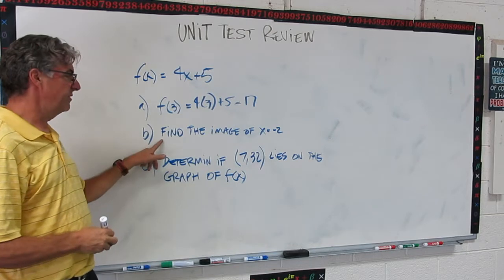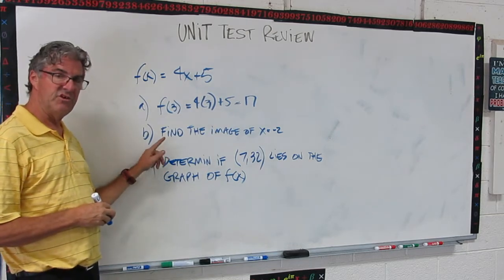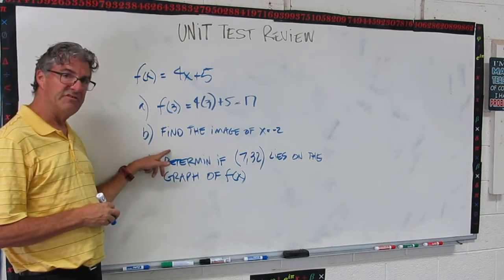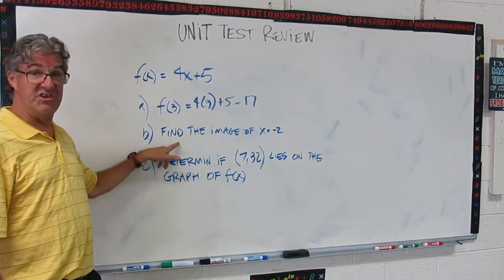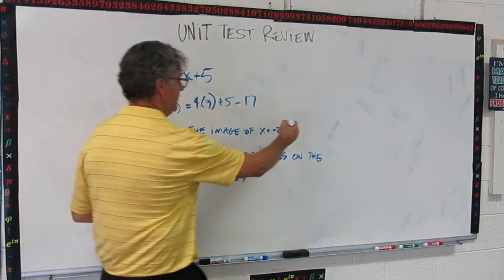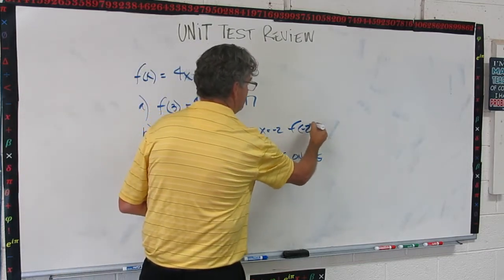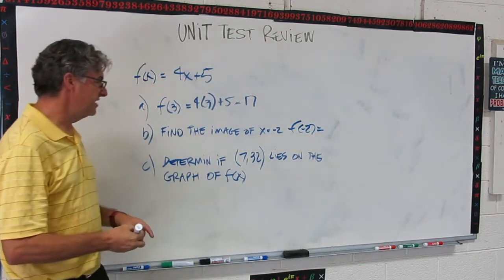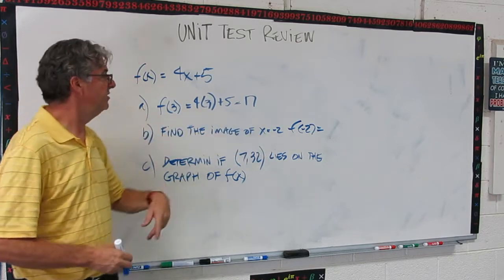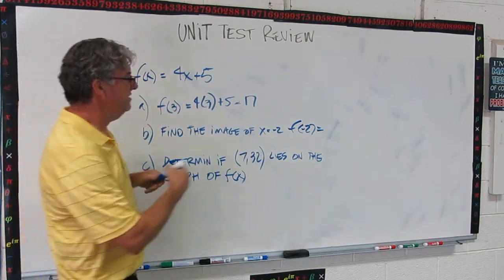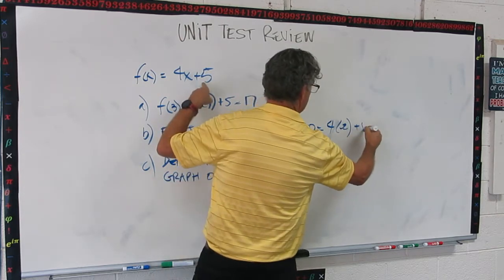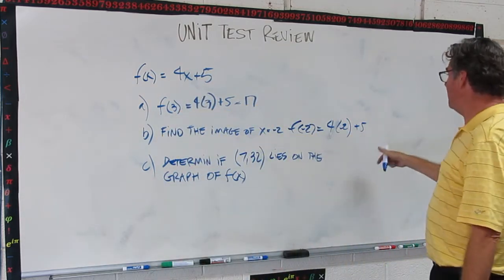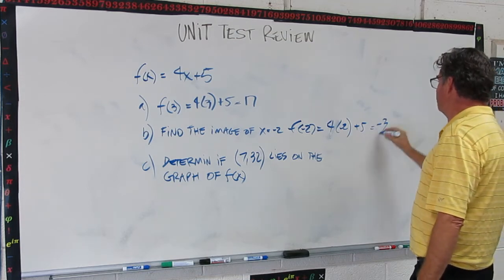Okay, now do this one. Again, I'm not going to explain what it means. You should know by now, so give it a try. Pause the video, and let's see what you got. So this is just another way to say f of minus 2. That's all it is. Find the image of x equals negative 2. So we're going to put negative 2 in. This is going to be 4 times negative 2 plus 5. This is negative 8 plus 5 is negative 3.